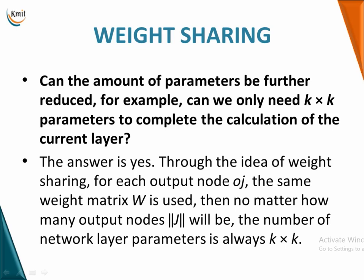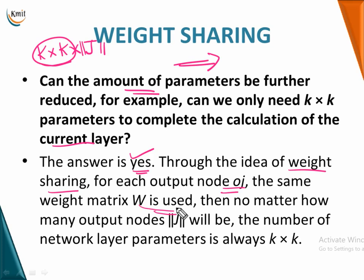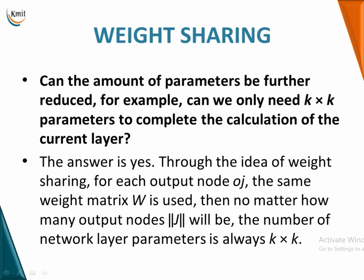Along with local correlation, there is another concept you must understand: weight sharing. These two concepts together explain why CNN came into existence. Although through the receptive field we reduced parameters to k×k×j, what if we could reduce further to just k×k parameters for one layer? Through weight sharing, for each output node Oj, the same weight matrix is used — no matter how many output nodes there are, the number of parameters stays k×k. All output nodes share their weights, drastically reducing parameters.